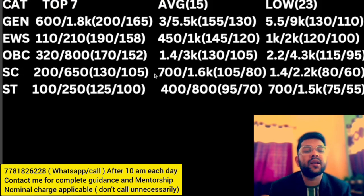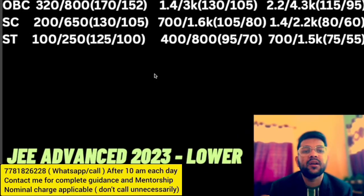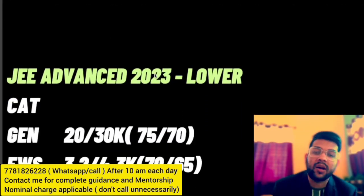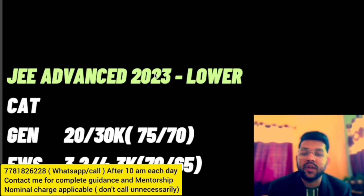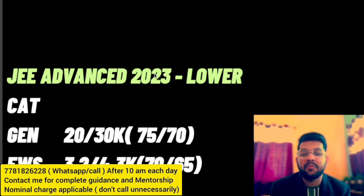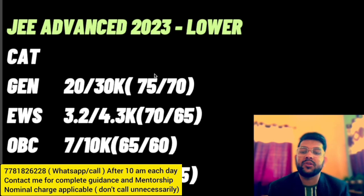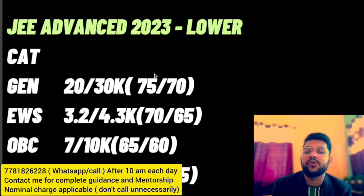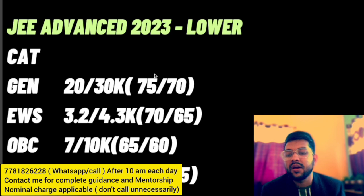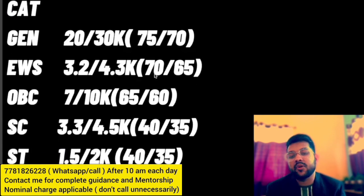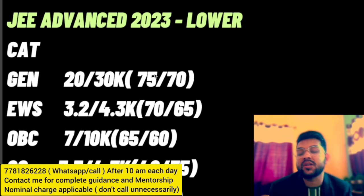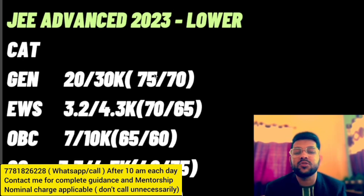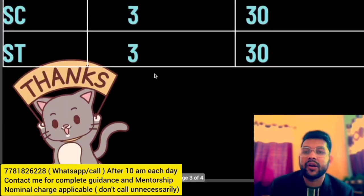For the lower IIT with any branch — that is, if you just want the IIT tag — for General: rank 20,000 to 30,000 for male and female. For EWS: up to rank 3,200 to 4,300. For OBC: rank 7,000 to 10,000. For SC: rank 3,300 to 4,500. For ST: rank 1,500 to 2,000. These ranks are achievable only if you do the counseling correctly through all JOSAA rounds up to round six. One mistake and you may not get it, which is why guidance is important.